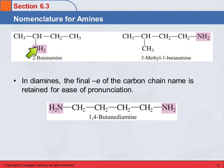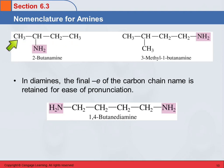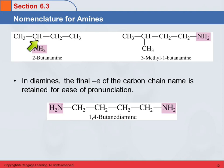Here we've got our nitrogen group, and when picking the chain, it has to include the carbon that the nitrogen is attached to. That's pretty simple here — we've got four carbons, that would be butane. So we take off the E and put amine: butanamine. Then we give a number to indicate which carbon this amine group is on — it's on the second one. So this is 2-butanamine.